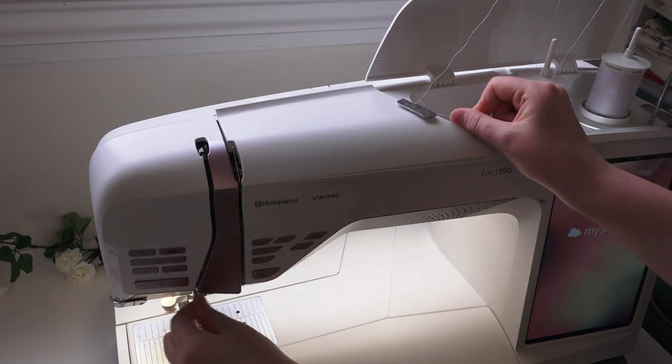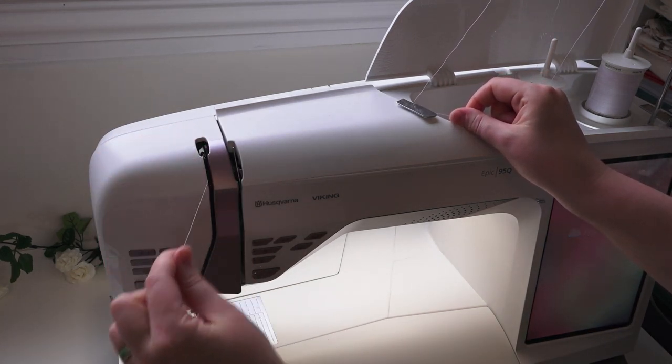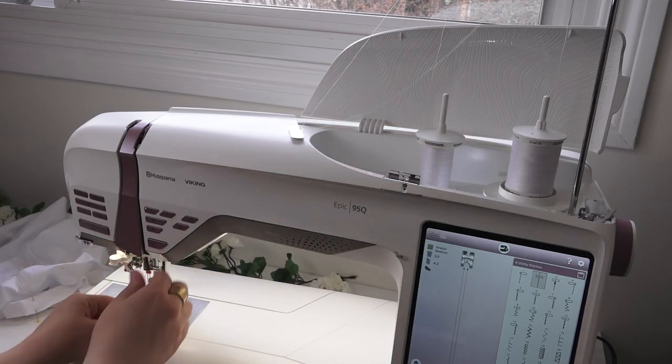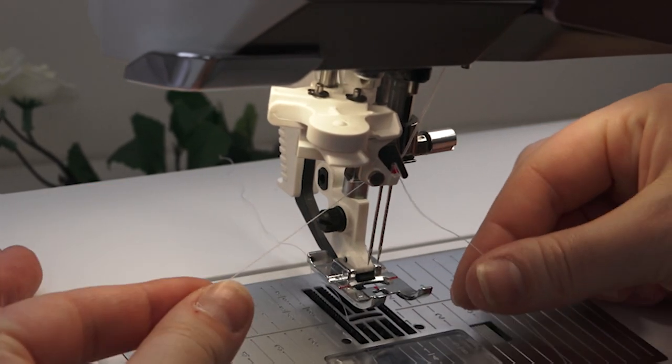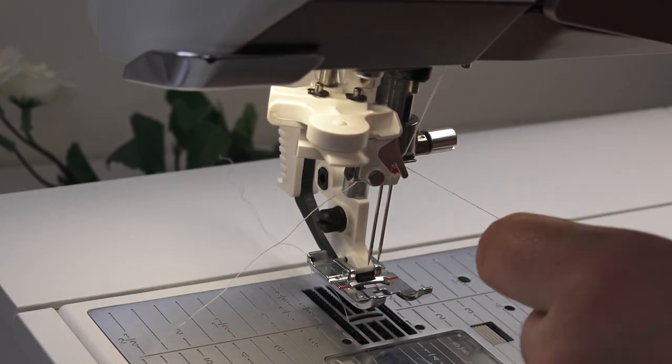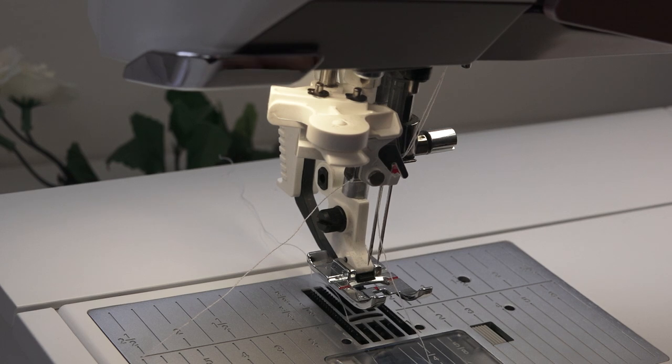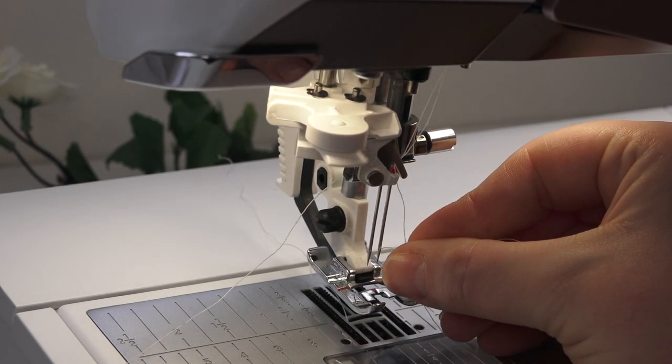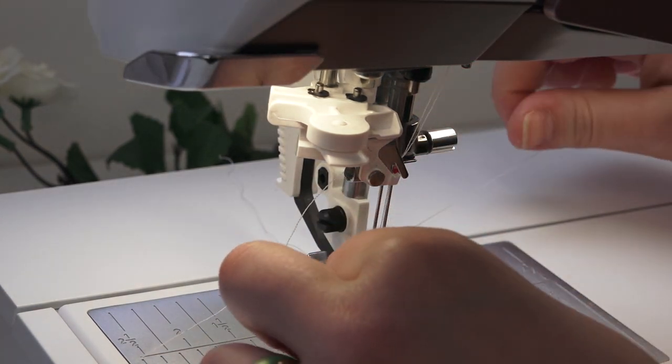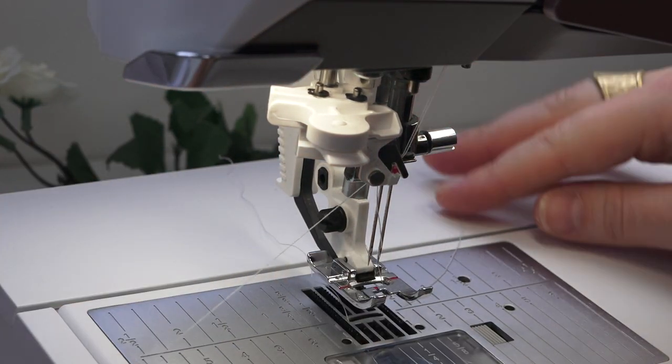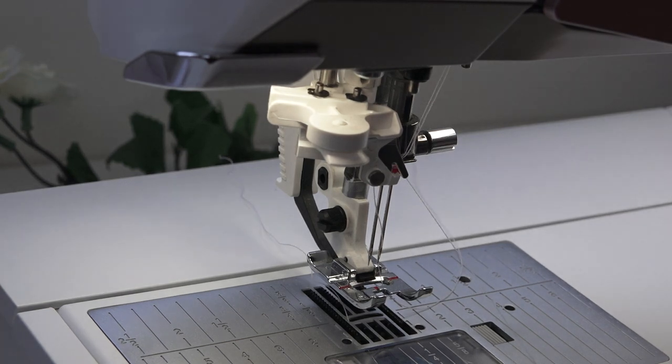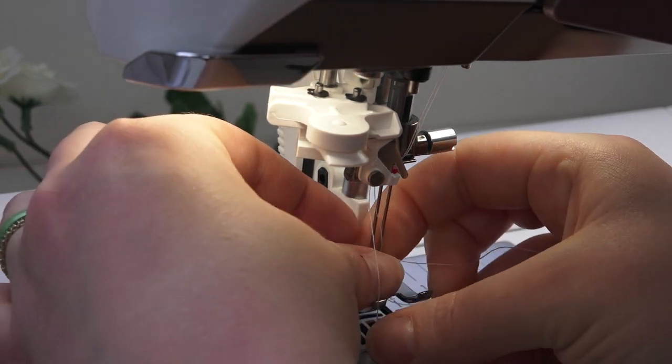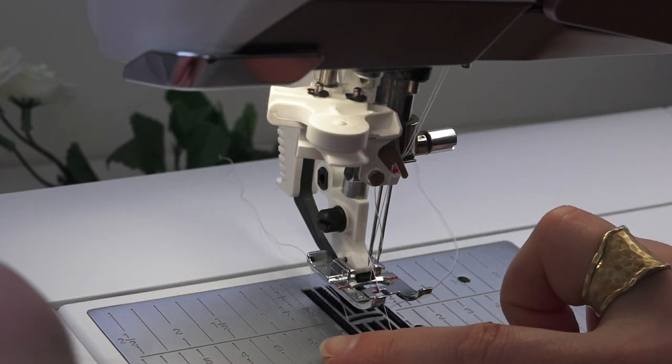I'm just going to hook it in down below. Now I'm going to take my right spool of thread and thread it through the right needle. Then I take my left spool of thread and thread it through my left needle, and then just put them all under the foot and behind.